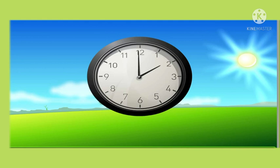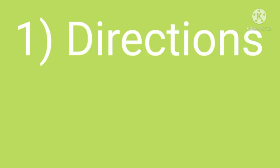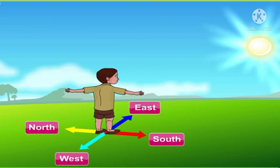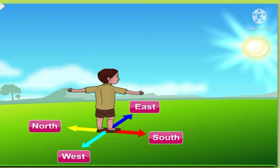Now we will see the first one, that is direction. Students, look at the picture. What you can see here — the boy is standing and he is facing the sun. It is written in front of him: east; behind him: west; to the left: north; and to the right: south. The sun is rising in the morning. The direction in which the sun rises is called the east. The boy is facing the rising sun, so he is facing east.